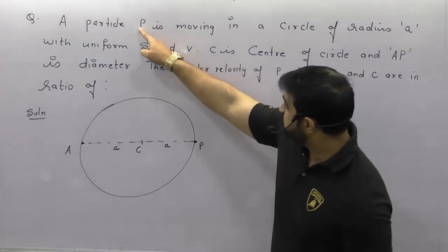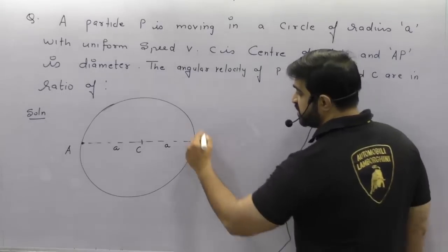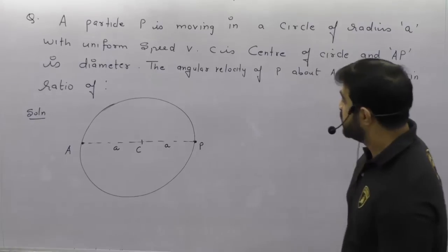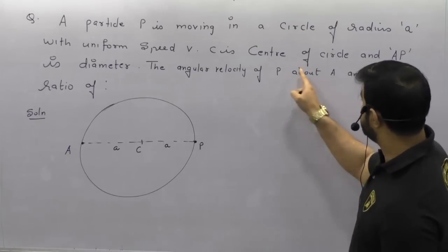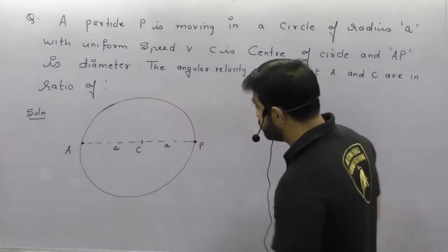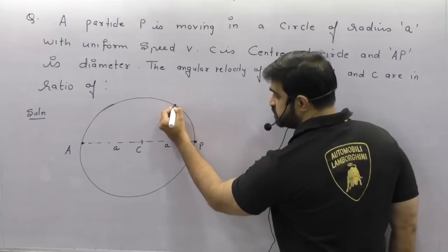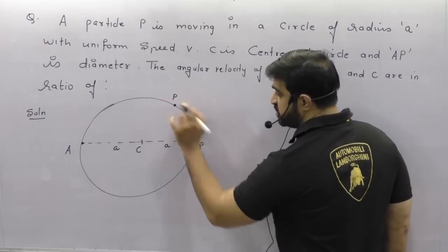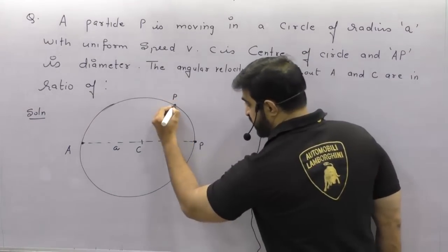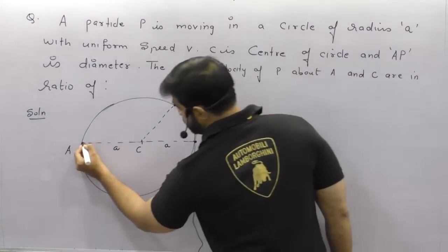The particle P is moving in a circle of radius A, going round and round. The angular velocity of P about A and C are in the ratio of — suppose P is there at any instant of time, I can say P is here. If I join this and if I join this.